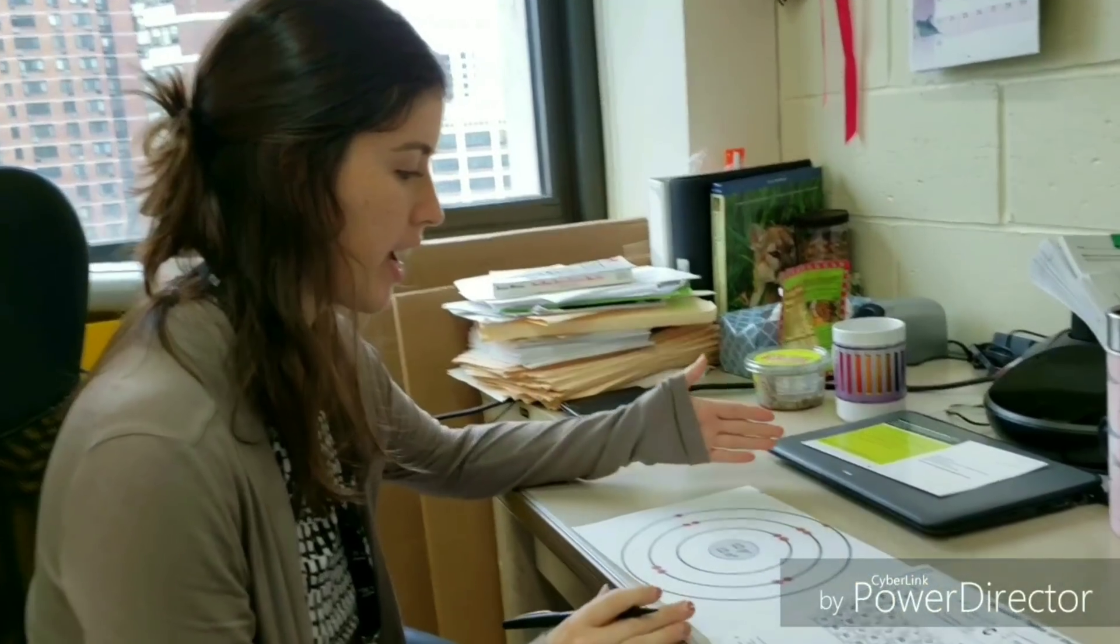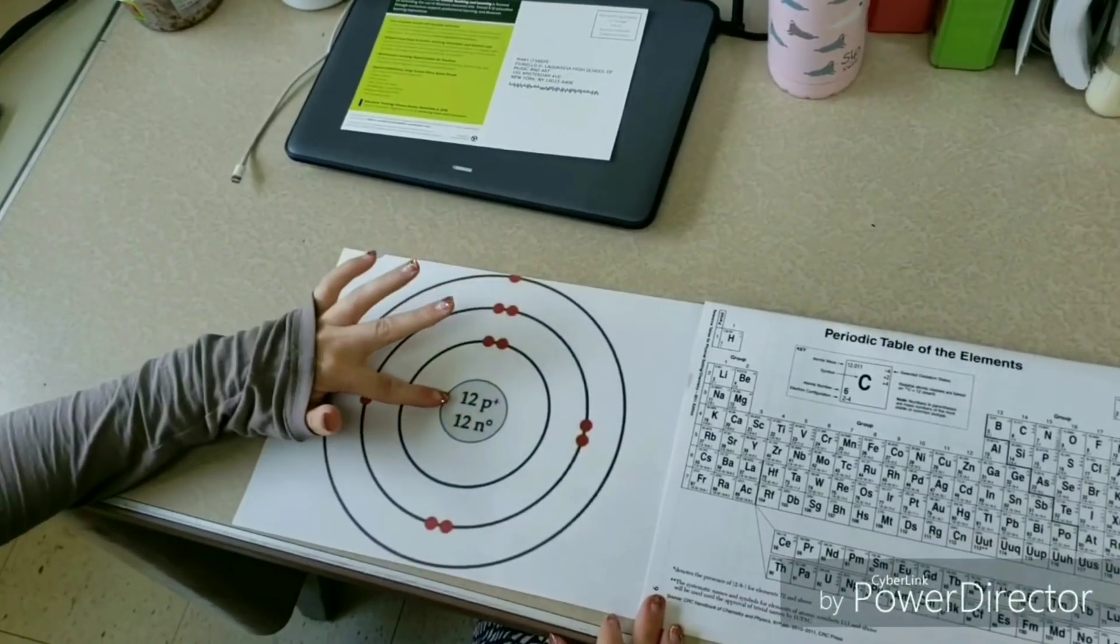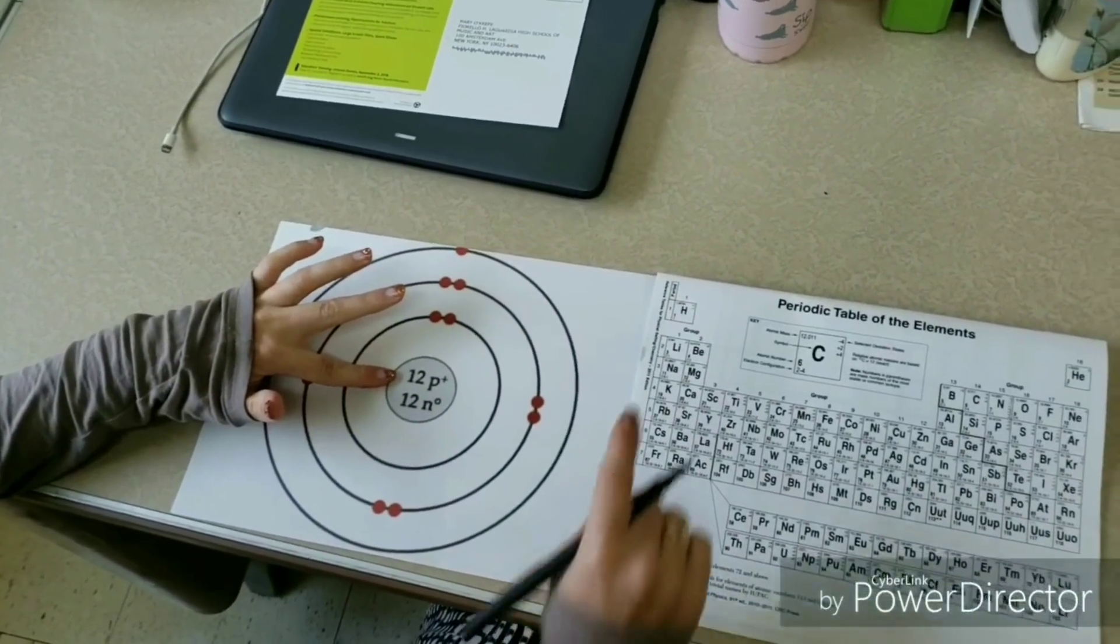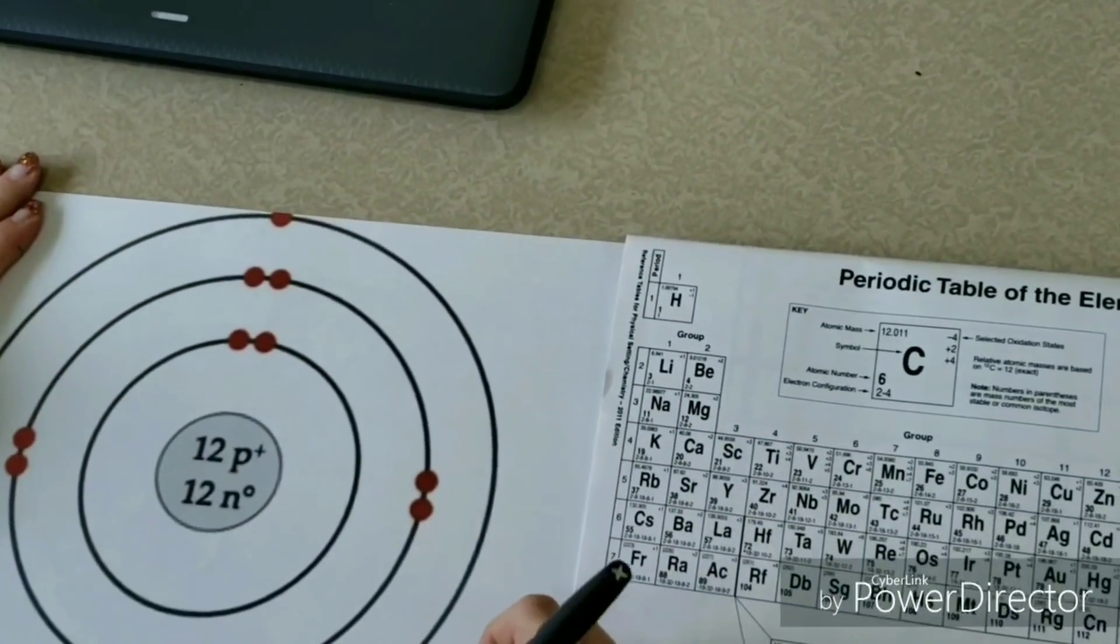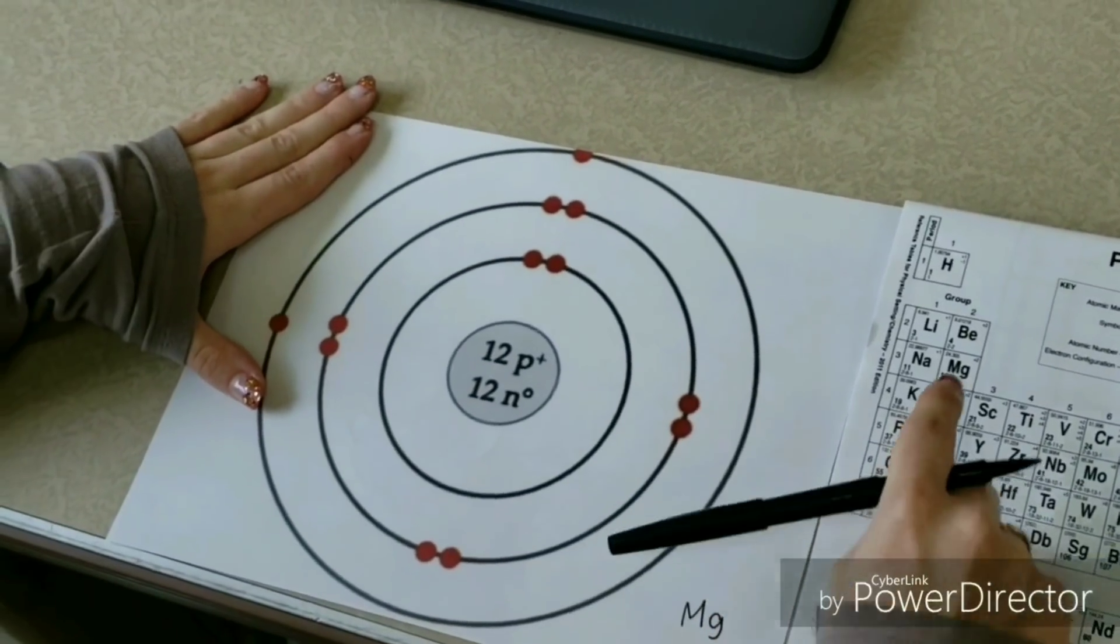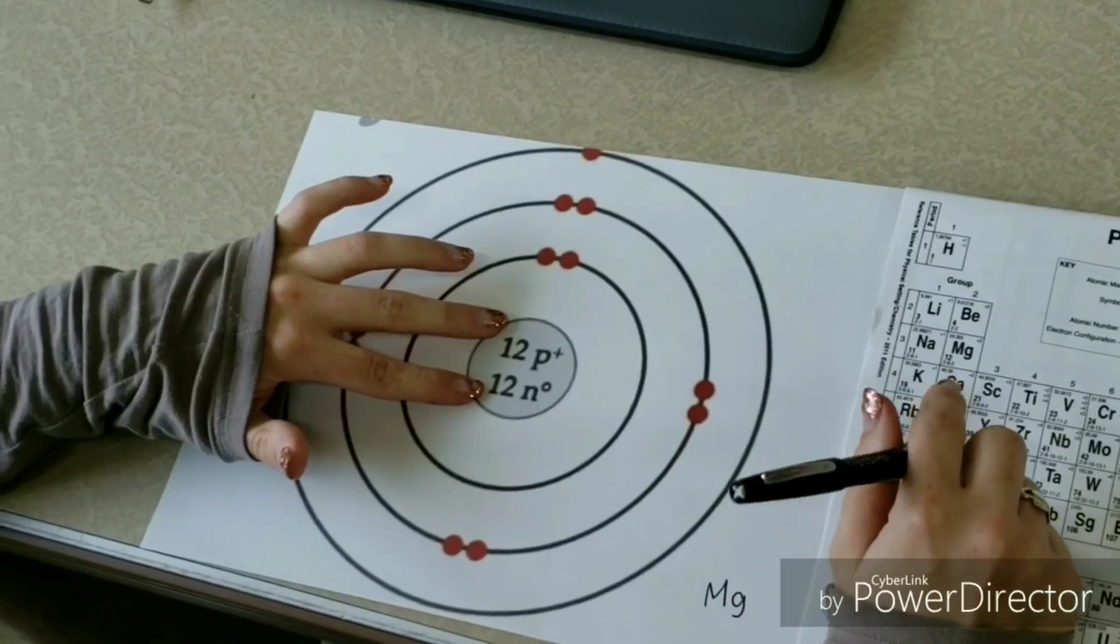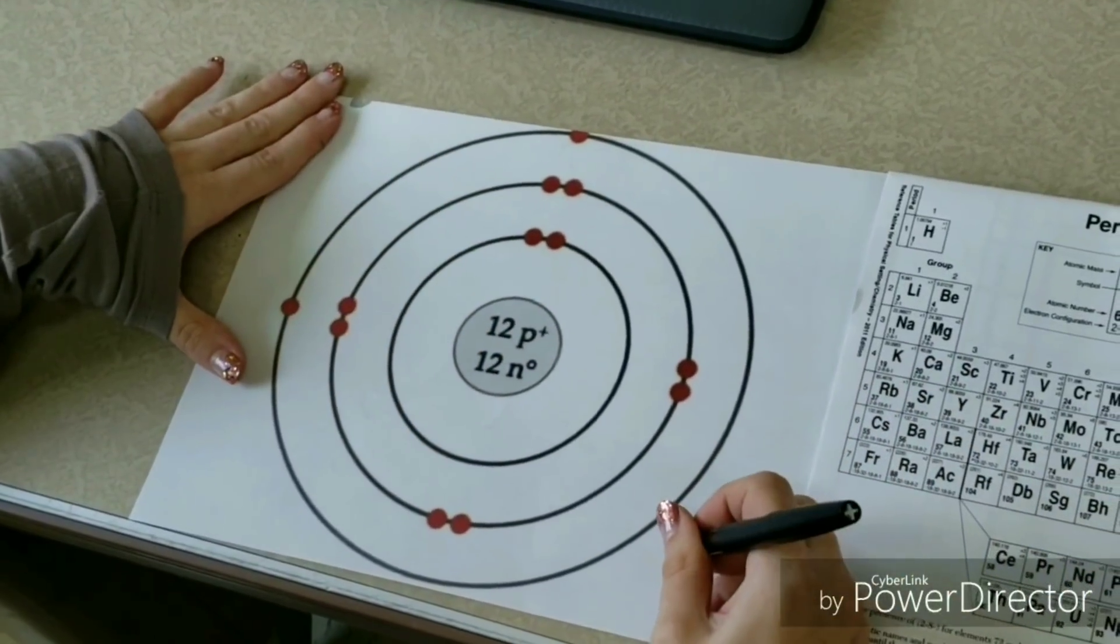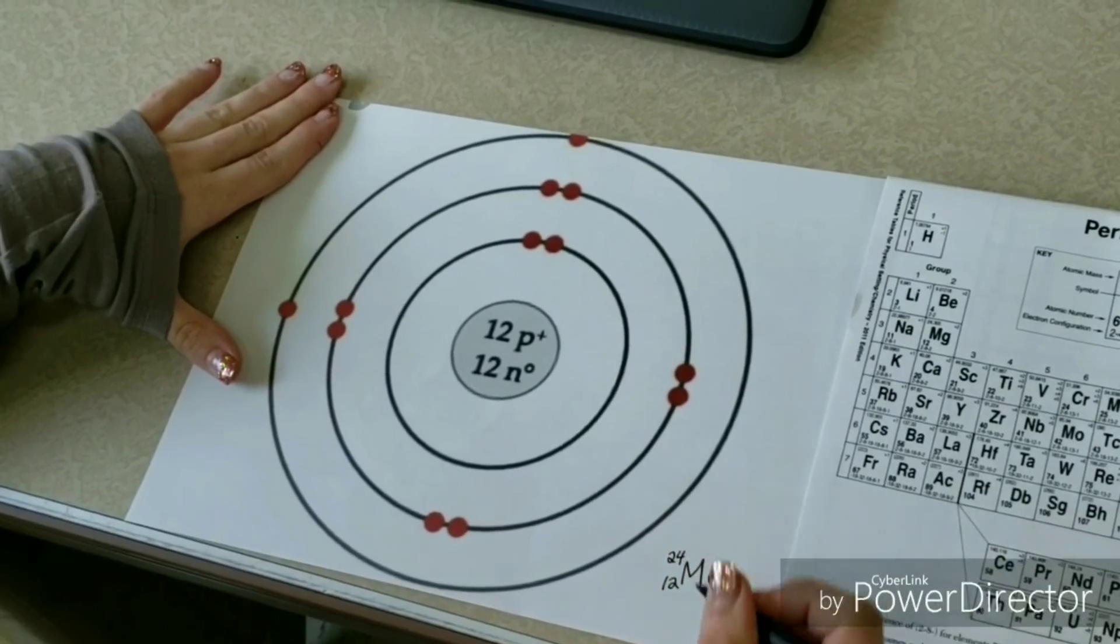So, I'm looking at this orbital diagram and I'm going to figure out what element it is. And since it has 12 protons, I know that the element is magnesium since magnesium has an atomic number of 12. And I'm going to look at the protons and neutrons now and those add up to 24. So, I know that it's magnesium 24 with an atomic number of 12.